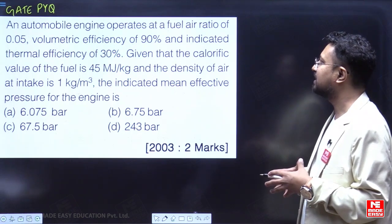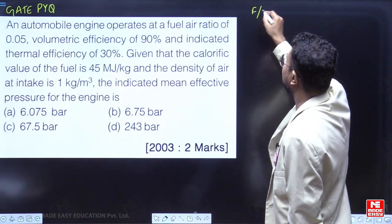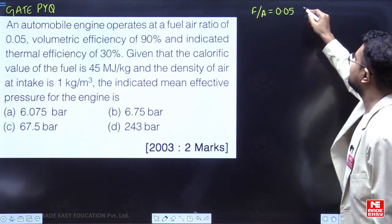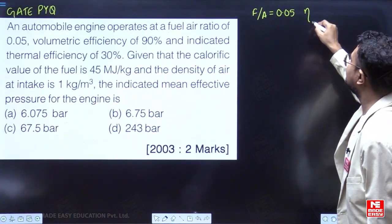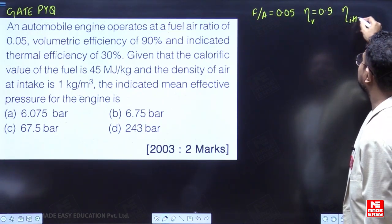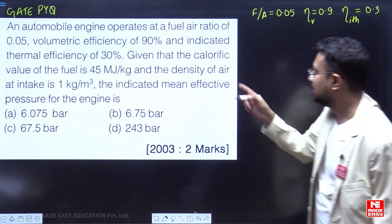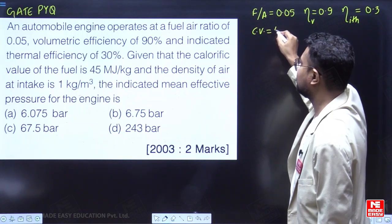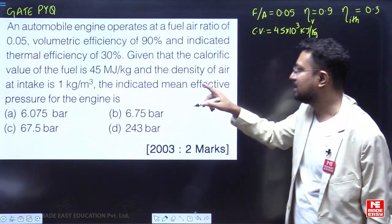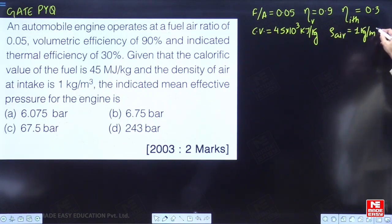We have an automobile engine operating at a fuel-air ratio of 0.05, so F/A = 0.05. The volumetric efficiency is given as 90%, that is 0.9. The indicated thermal efficiency is 30%, that is 0.3. The calorific value of the fuel is 45 × 10³ kJ/kg, and the density of air is 1 kg/m³.